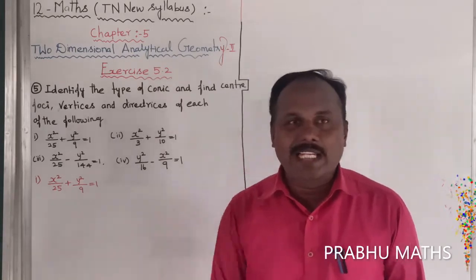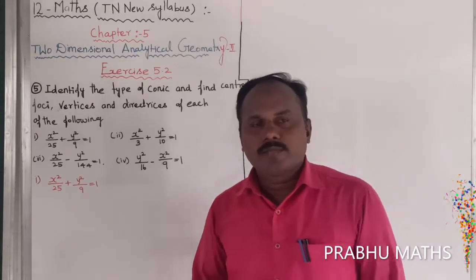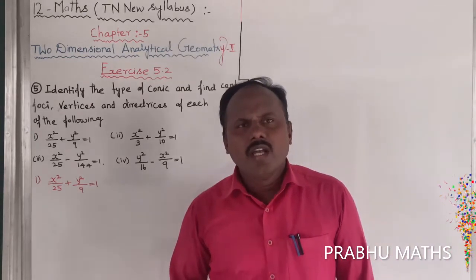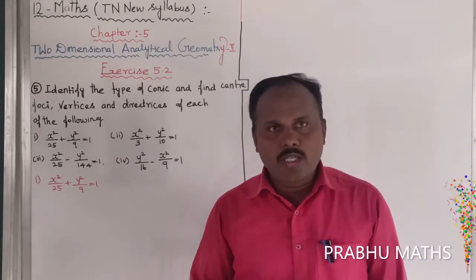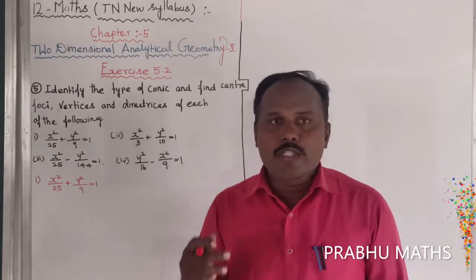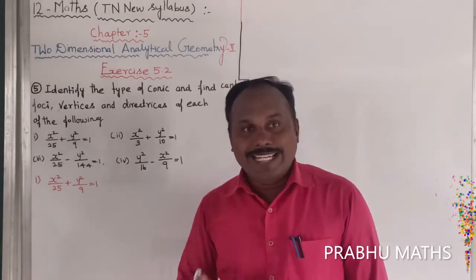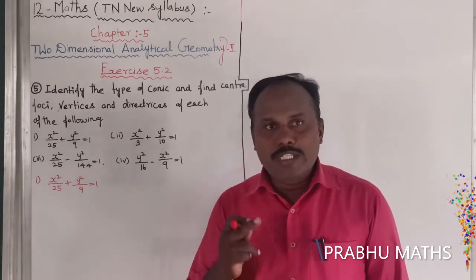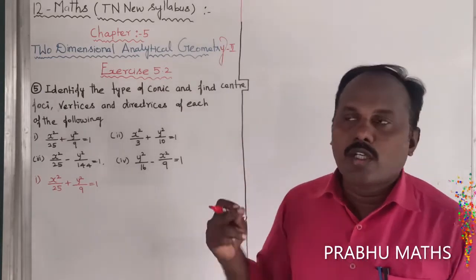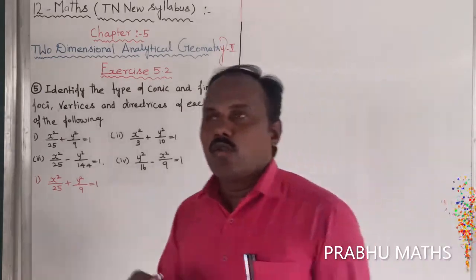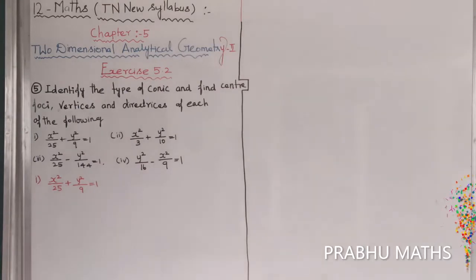That is the second type — that is the ellipse. The next one is hyperbola. Hyperbola means x squared by a squared minus y squared by b squared is equal to 1 — that is the first type. Second type means y squared by a squared minus x squared by b squared is equal to 1. That is the second type of the hyperbola.